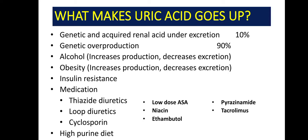Alcohol, obesity, and insulin resistance are factors that can lead to hyperuricemia. There are some medications like diuretics — for example, thiazide diuretics and loop diuretics. There are some antituberculous drugs like pyrazinamide and ethambutol. There are some immunomodulators like tacrolimus and cyclosporine. And of course, some low-dose aspirin or niacin can lead to hyperuricemia.